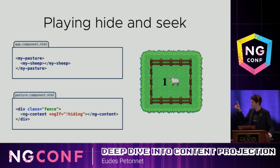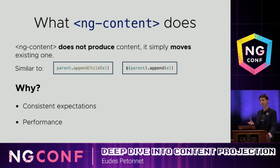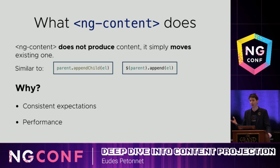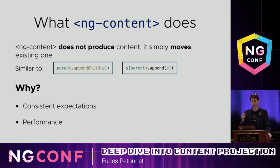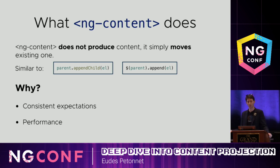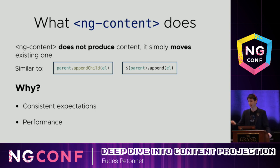What's happening is that ng-content doesn't produce any content — it just moves existing content from one place to another. Think of it like appendChild on HTML DOM nodes or jQuery.append. It just moves an element from one place to another. If you chain appendChild, only the last parent actually gets the element. In the case of multiple ng-contents, the first one would get the sheep momentarily, but only the last ng-content would ultimately keep it.